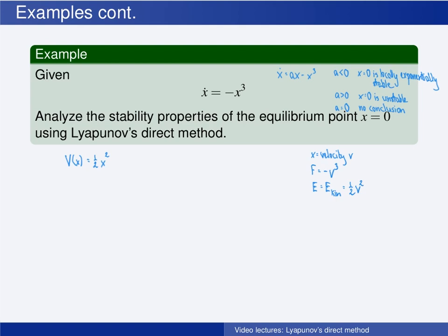Another motivation is that this is a simple choice of a quadratic Lyapunov function candidate where P is the identity matrix. Since the dimension of the system is one, this is the same as one-half x squared. So there are several possible motivations for choosing this Lyapunov function candidate.